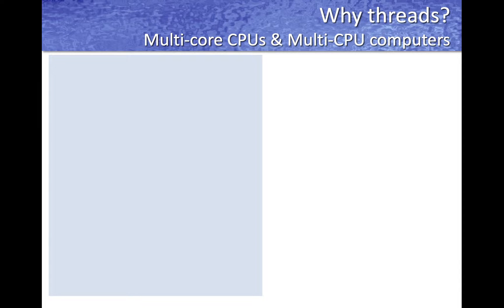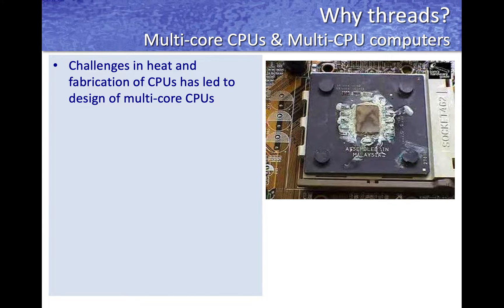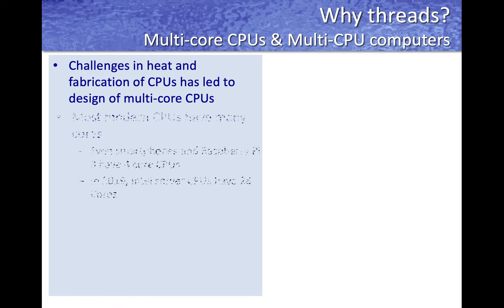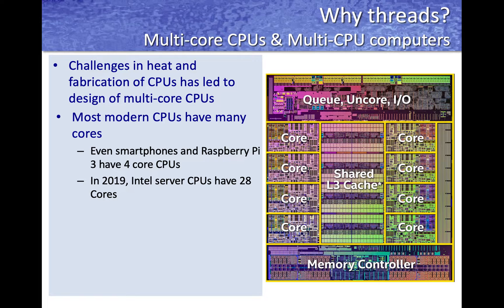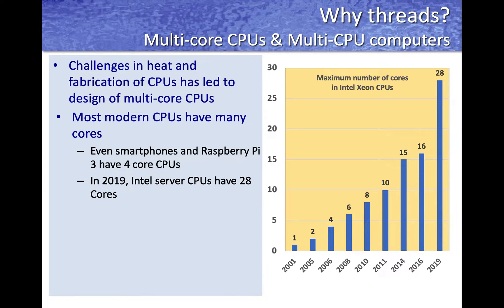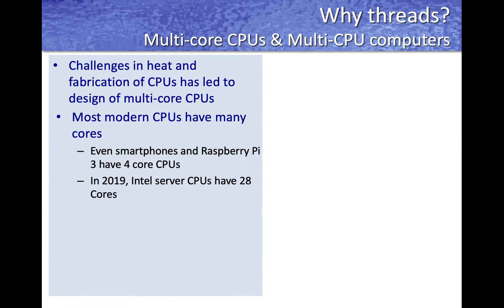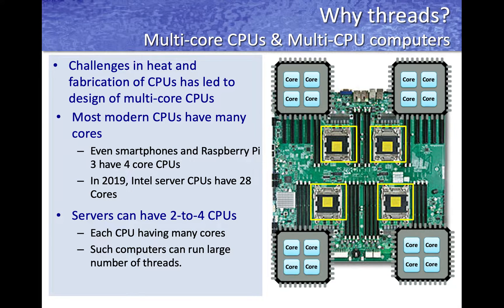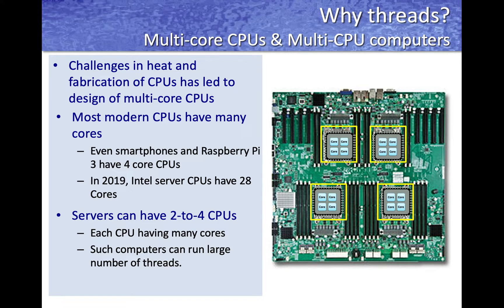Now let's look at why threads were introduced. Initially, microprocessors were designed to run at increasing speeds, which introduced challenges in heat and fabrication of really fast CPUs without causing thermal failure. So most modern processors now have many cores — even smartphones and embedded devices have multiple cores. These cores run a little slower individually but all run in parallel, enabling the CPU to process more instructions per unit of time.